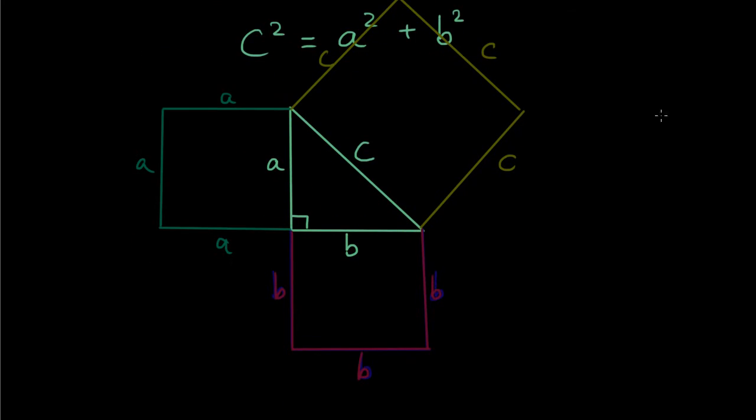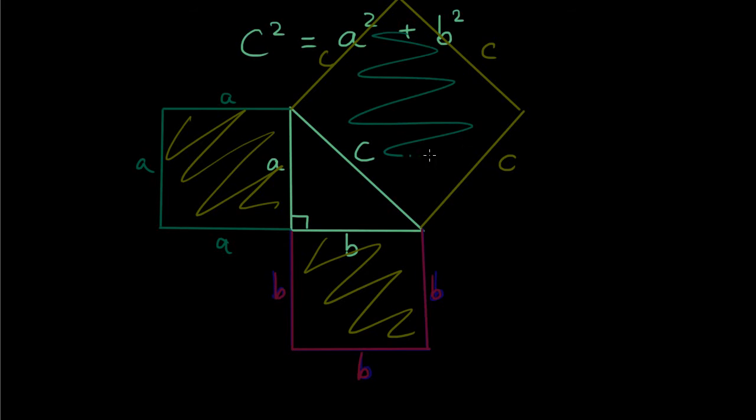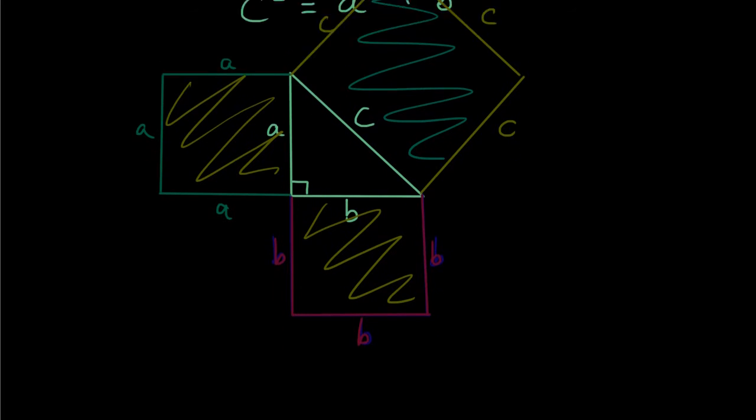Then what we're saying is that the area of box a, the area here plus the area here will equal the area here. And this will work with any right angle triangle. So that is the theory behind the Pythagoras theorem.